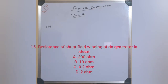The resistance of the shunt field winding of a DC generator is approximately 200 ohms.